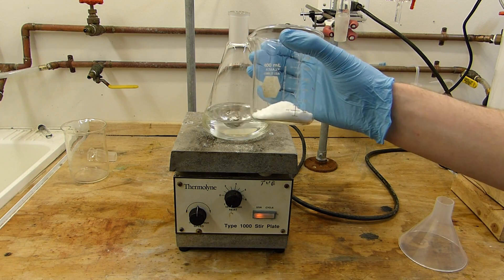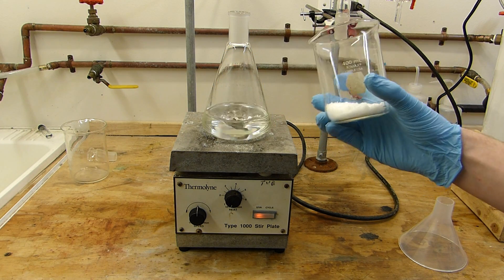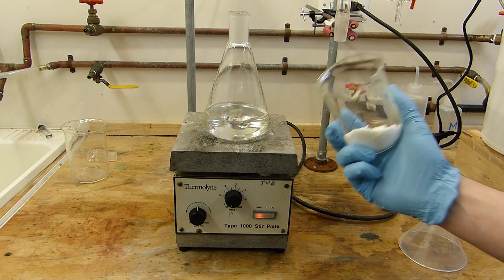I've measured here 30 grams of oxalic acid dihydrate, and I'm just going to add it to this with stirring and then keep it stirring to keep it in suspension.